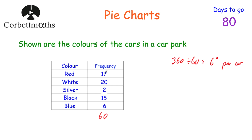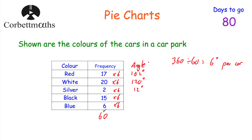So each car is worth 6 degrees. If we multiply the frequencies by 6: 17 red cars gives 17 times 6 equals 102 degrees. 20 times 6 is 120 degrees. 2 times 6 is 12 degrees. 15 times 6 is 90 degrees. And 6 times 6 is 36 degrees. We can check: 102 plus 120 plus 12 plus 90 plus 36 equals 360. That's what we wanted — fantastic. So we've found the size of each of the angles.